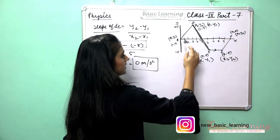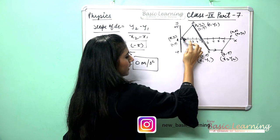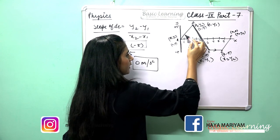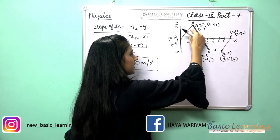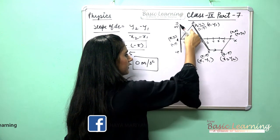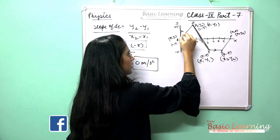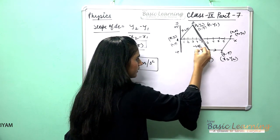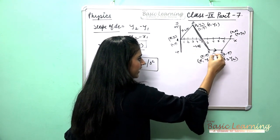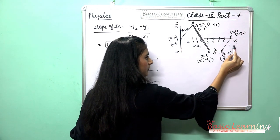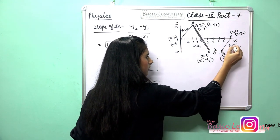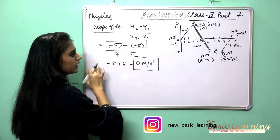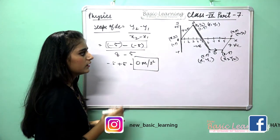When the line is parallel to the time axis, the slope is zero — so the acceleration is zero m/s². By this calculation you can see: when the graph goes upward it is positive, when it decreases it is negative, when it is a parallel straight line it is zero, and when it goes up again it will be positive.